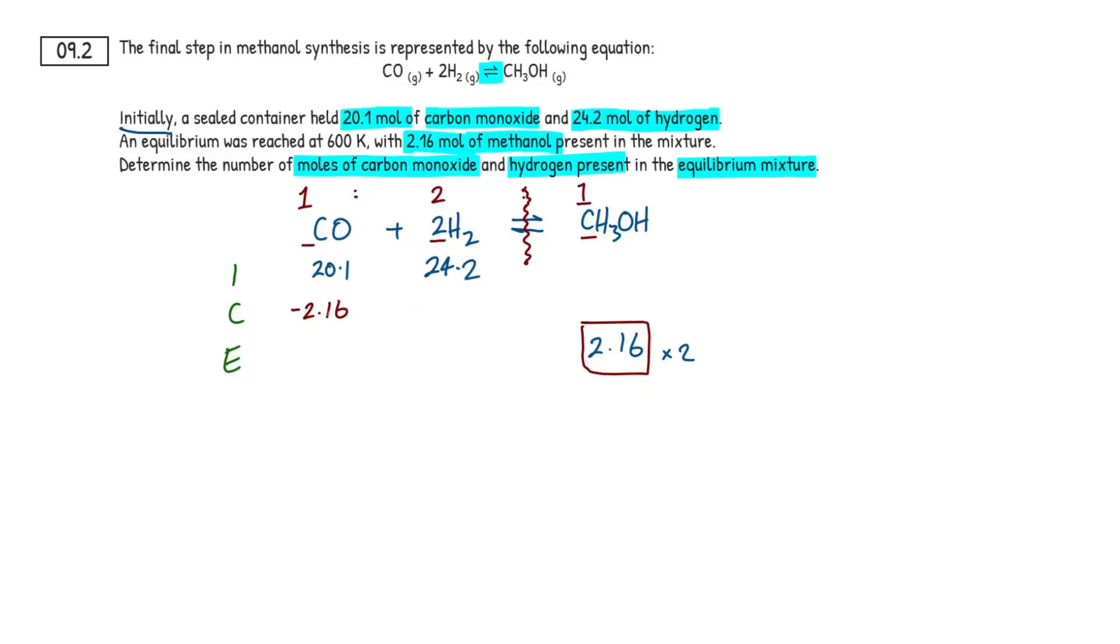So if we write that out, then this multiplied by two is just going to be 4.32. But again, we have to minus it because we're producing it. It's going to be lost from the reactant side.